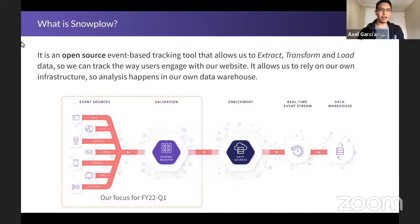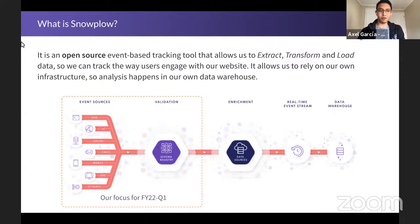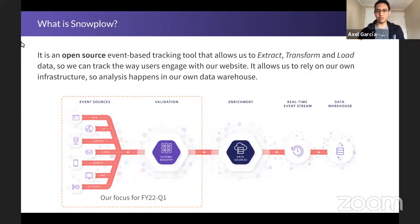Let's dive into Snowplow. Snowplow is an open-source event-based tracking tool that allows us to extract, transform, and load data, so we can track the way users engage with our website. It also allows us to rely on our own infrastructure so the analysis happens in our own data warehouse. You can see the data flow diagram in Snowplow's documentation. We'll be focusing on event sources — how to capture data — and we'll talk about validation using schemas.